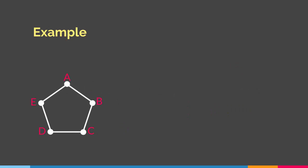Let's suppose we have this graph. We have vertices A, B, C, D, and E. As you can see, the vertices are connected or adjacent in a particular way: A is connected to B, B is connected to C, C is connected to D, D is connected to E, and E is connected to A. This is the way that these vertices are connected.